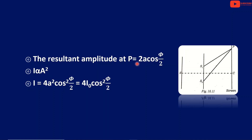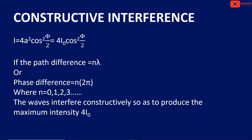The resultant wave has amplitude 2a cos(φ/2). Now, the intensity is I = 4a² cos²(φ/2). Because intensity is proportional to the square of amplitude. Since the intensity of each source is I₀, the resultant intensity is I = 4I₀ cos²(φ/2).